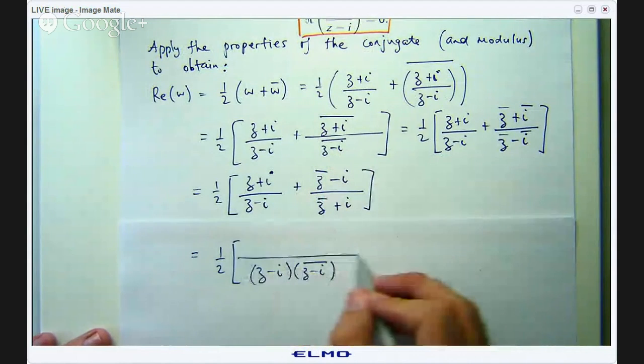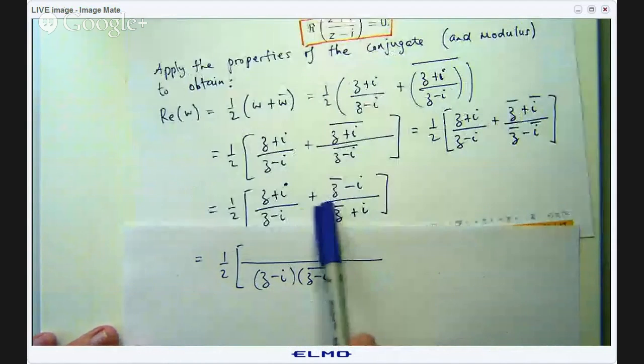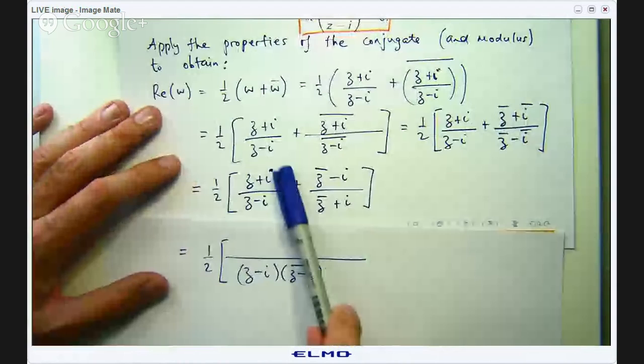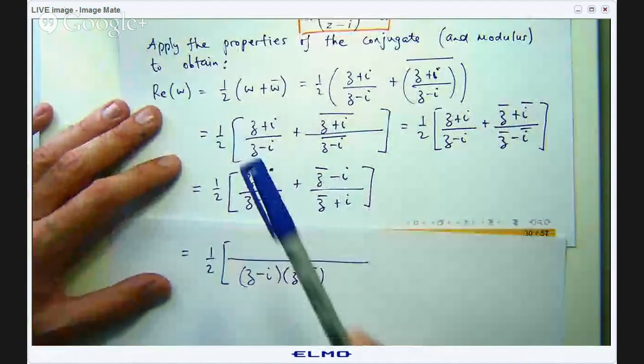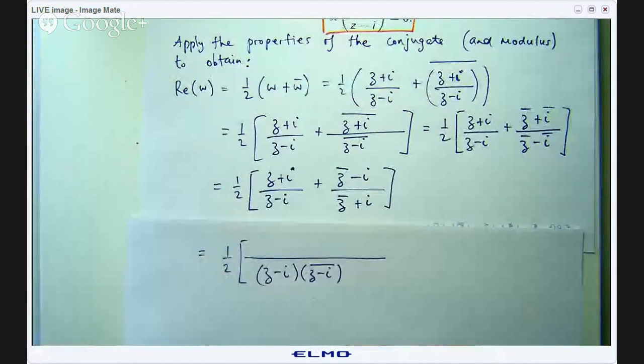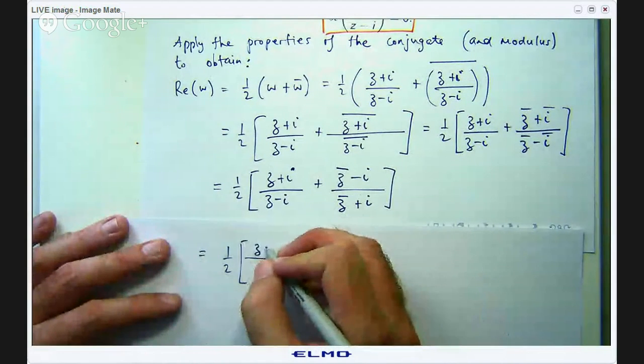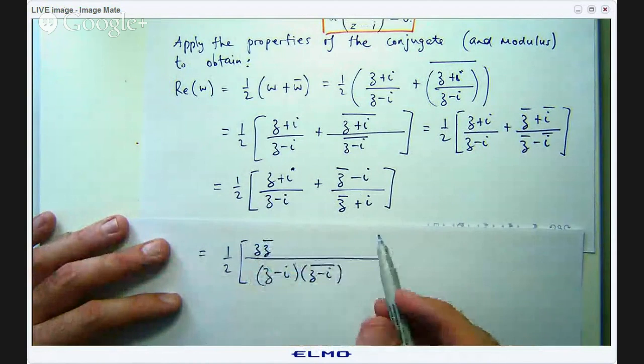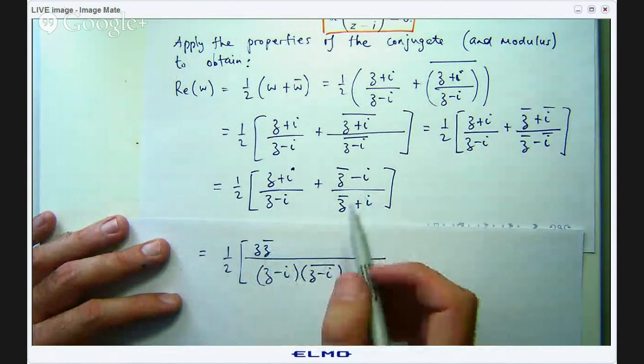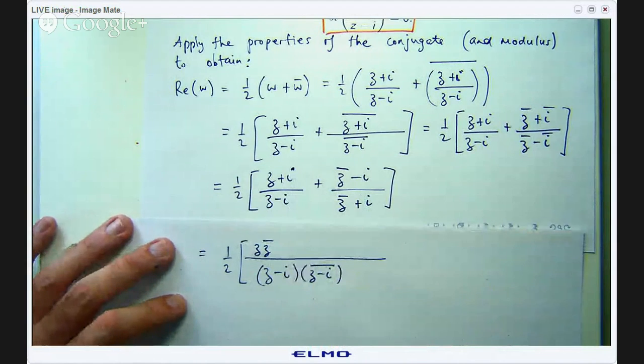Okay so I will write that as this now. And on the top well it is going to be basically this whole thing multiplied with this plus this whole thing multiplied with this. So let us work through that. So I am going to get z bar times z. So that is going to be real I know that.